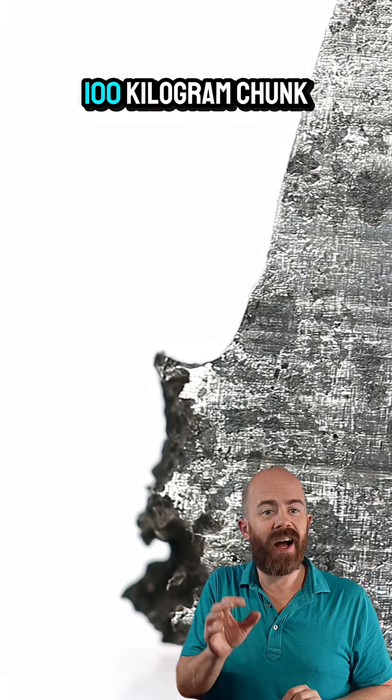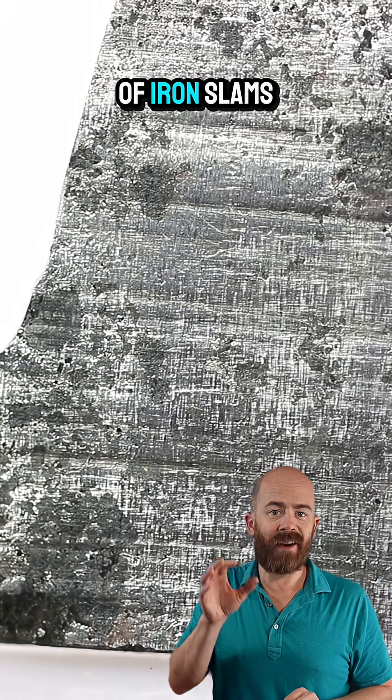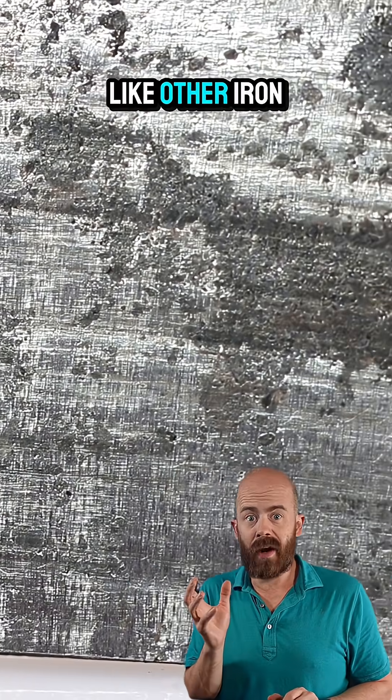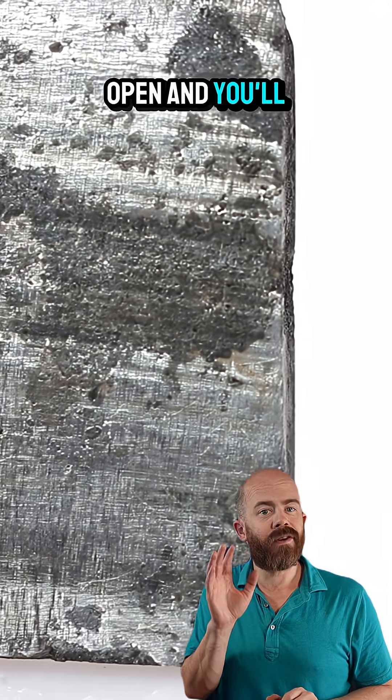A few seconds later, a hundred kilogram chunk of iron slams into the earth. At first glance, the meteorite looks like other iron meteorites, but slice it open and you'll find something special.